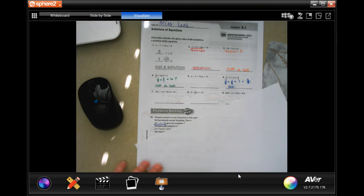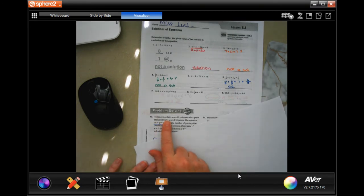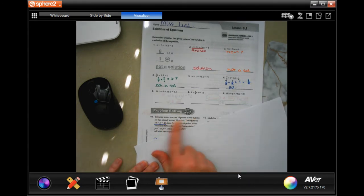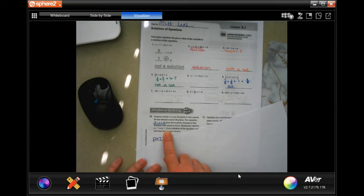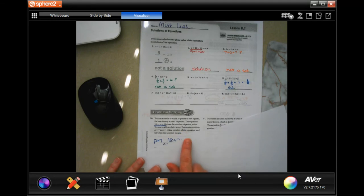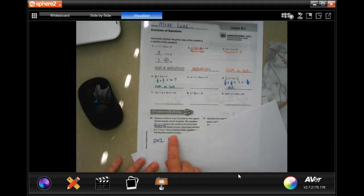We're going to go down to number 10 and it says Terrence needs to score 25 points to win a game. He's already scored 18 points. The equation 18 plus p equals 25 gives the number of points that Terrence needs to score. Determine whether p equals 7 or p equals 13 is the solution to the equation and tell what the solution means.